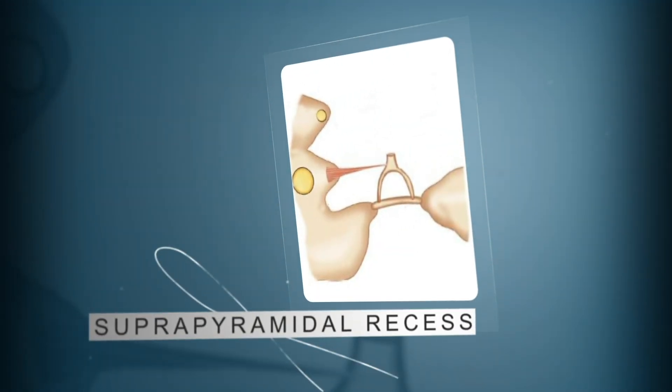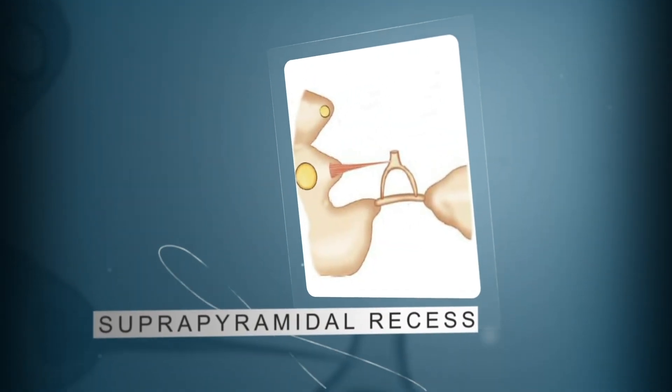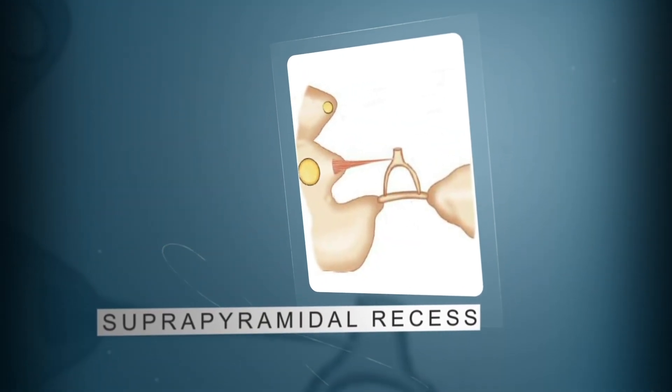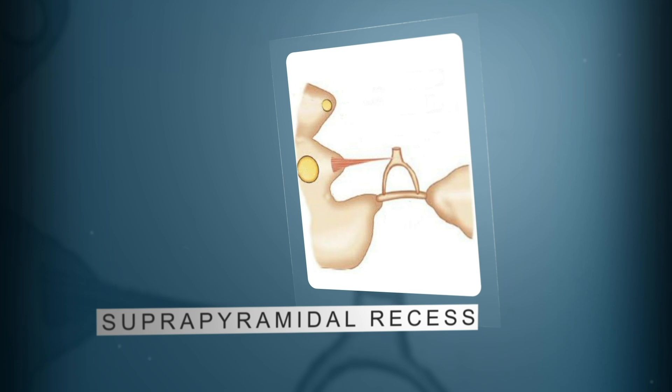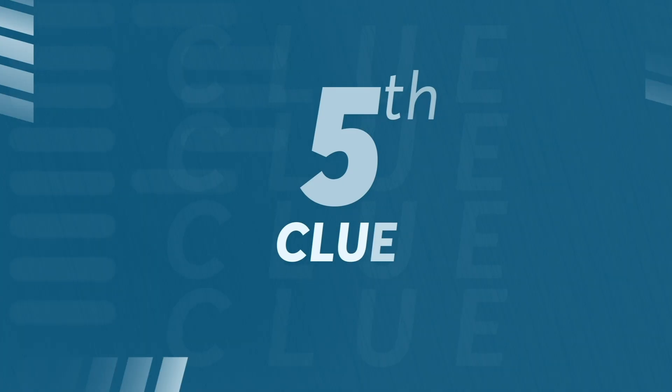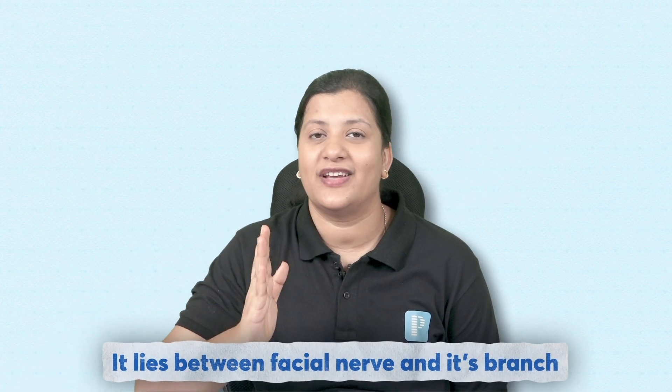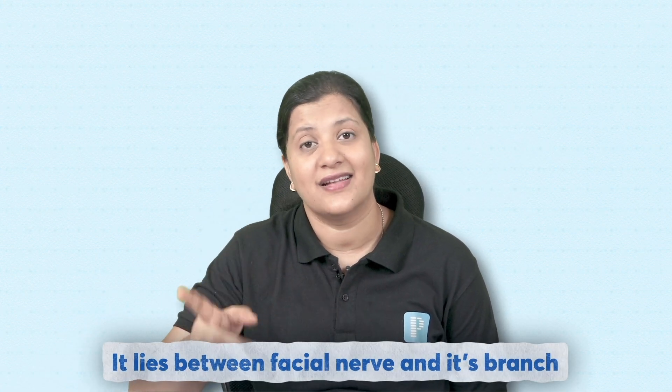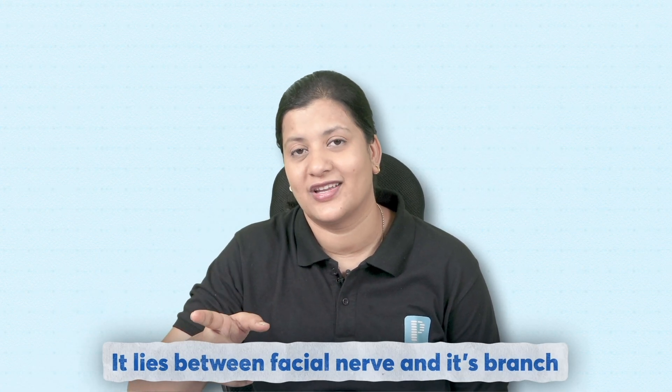Clue number four — the easiest clue: this is a suprapyramidal recess. And the last clue: this recess lies between the facial nerve and its branch.